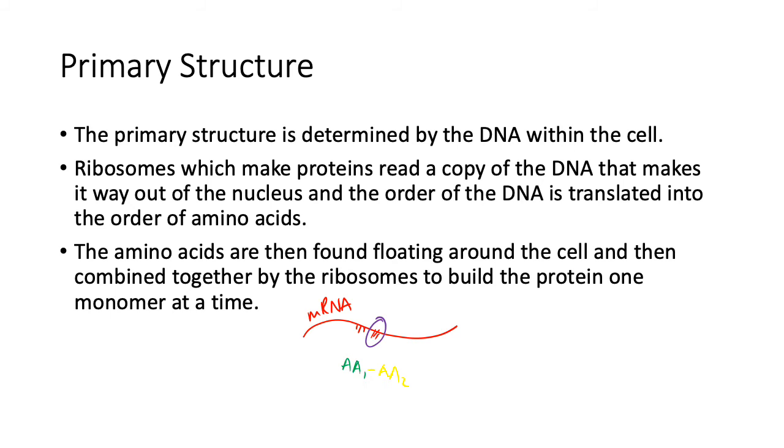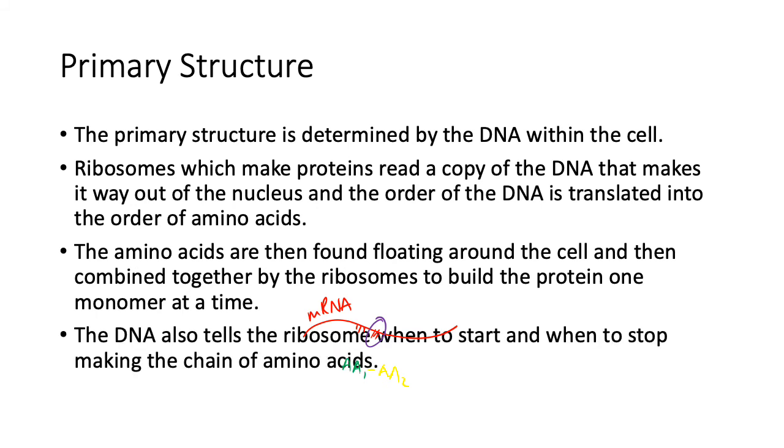And the monomers continue to grow or to be attached on until you have a polymer. The DNA also tells the ribosomes when to start and when to stop. So in some of the polymerization processes, the starting and stopping is quite random, but the DNA tells the proteins when to stop so that it exactly makes the same protein over and over and over again.